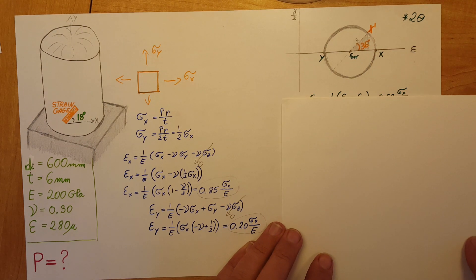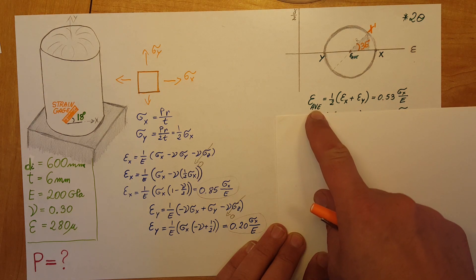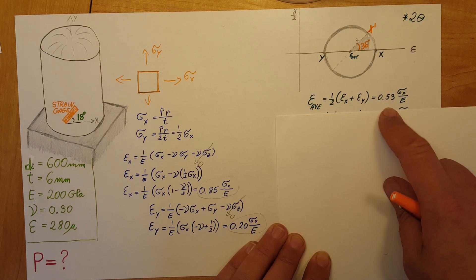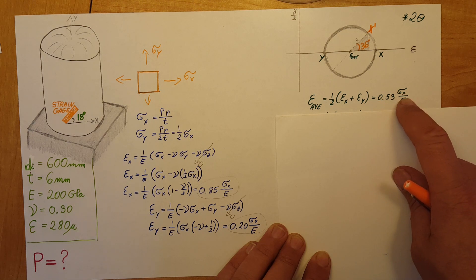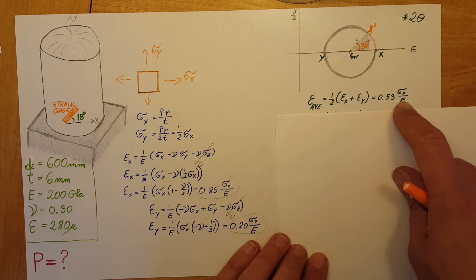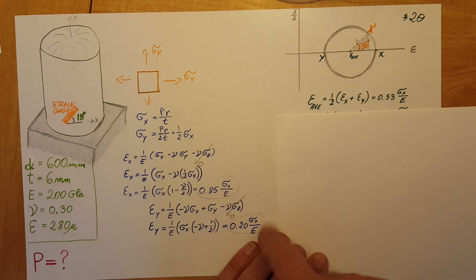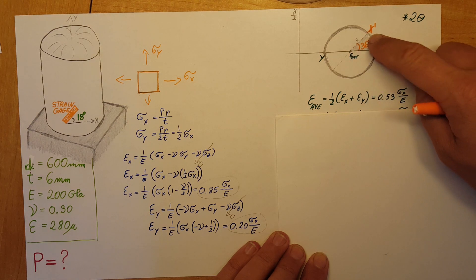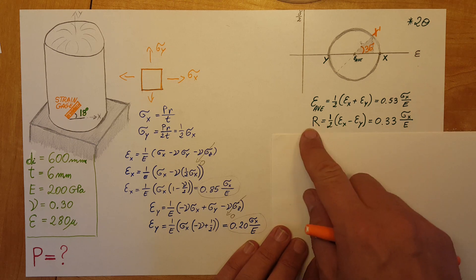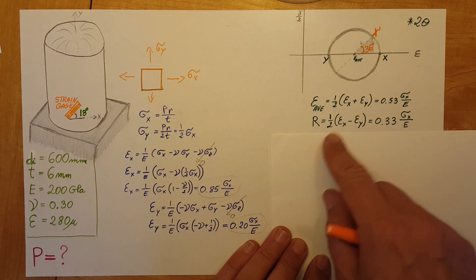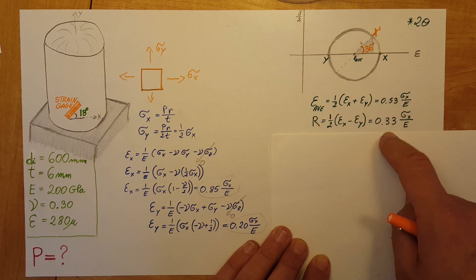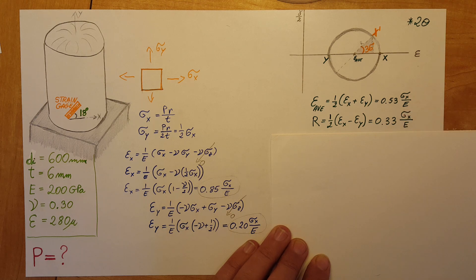Next, I'll calculate my strain average, which is one-half times strain x plus strain y. This gives us 0.53, and I'll leave sigma x over E as a variable. For R, going from here to there, we calculate one-half of epsilon x minus epsilon y. We get a nice value and leave this as a variable.